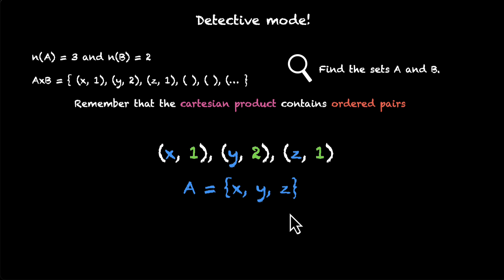What about set B? Set B has elements 1 and 2. B has 1 and 2. And because B has two elements, this solves our mystery. This completes the puzzle. Let's try one more.